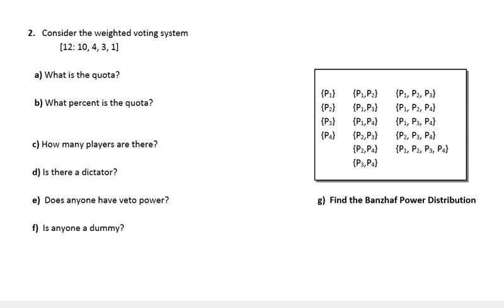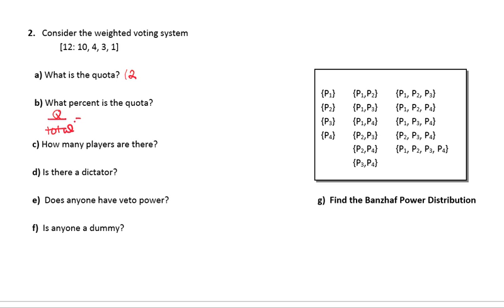Example 2: Consider the weighted voting system [12: 10, 4, 3, 1]. The quota is 12. What percent is the quota? It's the quota divided by the total votes: 12 out of 10 + 4 + 3 + 1 = 12 out of 18, which is 2/3, or approximately 67%. How many players are there? There are 4 players, since there are 4 numbers besides the quota.